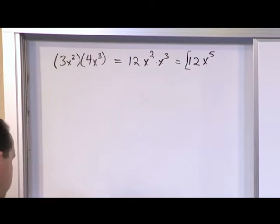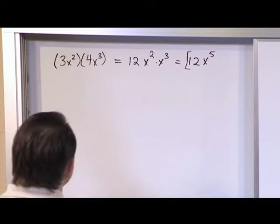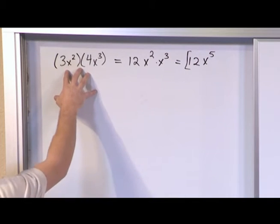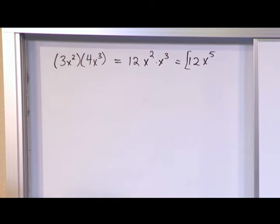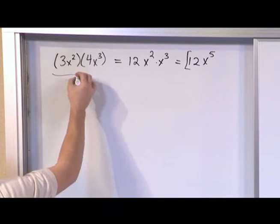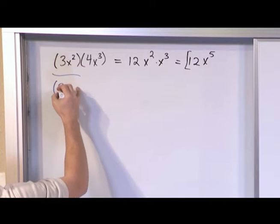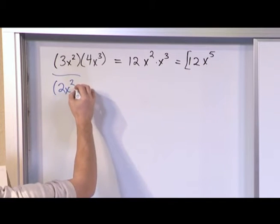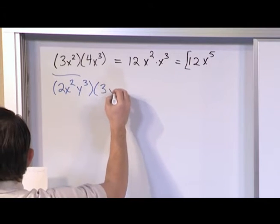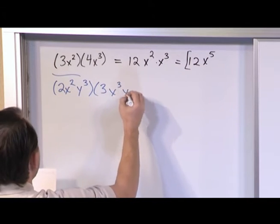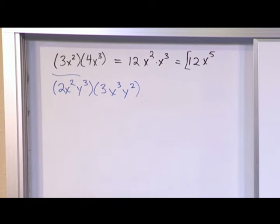So it's building on really something we have discussed previously. Now this is a very simple problem. We're going to get into larger polynomials and how to handle that here in just a few minutes. But for now let's say we had something like 2x²y³ multiplied by 3x³y².